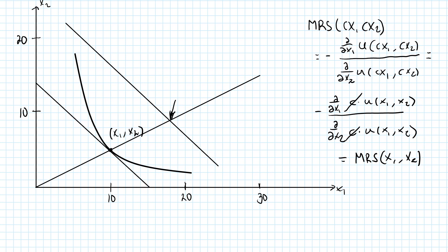Well, simply because that point must satisfy the first order condition. Since preferences are homothetic, the slope of the indifference curve at this point is the same as the slope of the indifference curve at the original point. And since the slope of the indifference curve at this new point must equal the slope of the budget line, the first order condition must be satisfied. The same thing will be true for any point along this straight line, and any bundle on the straight line must be an optimal bundle. If optimal bundles are unique, then the straight line must be the income offer curve.